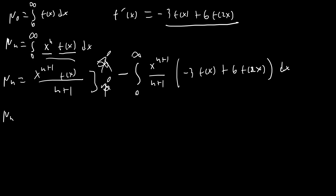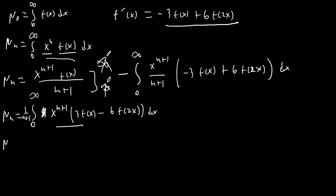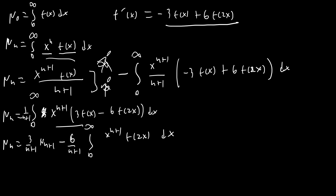Once we simplify, we get that μ(n) equals — putting 1/(n+1) outside — the integral from zero to infinity of x^(n+1) times (3f(x) − 6f(2x)) dx. Clearly this first part is just going to be μ(n+1). So we have μ(n) equals 3/(n+1) · μ(n+1) minus 6/(n+1) times the integral from zero to infinity of x^(n+1) · f(2x) dx.